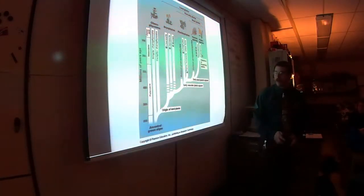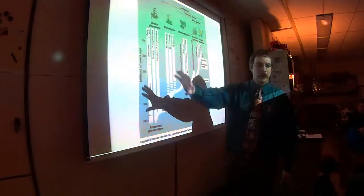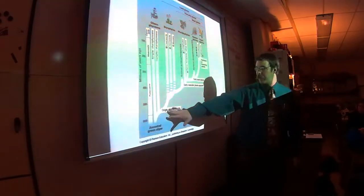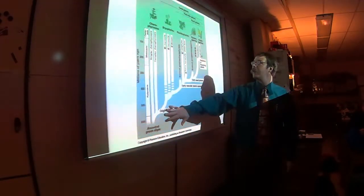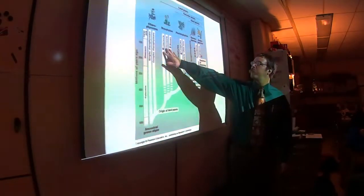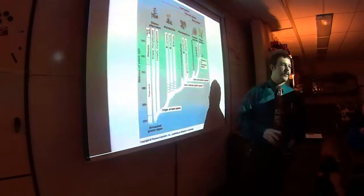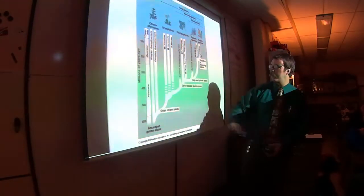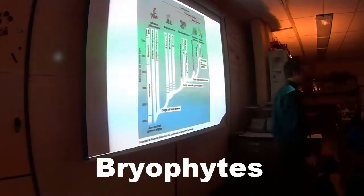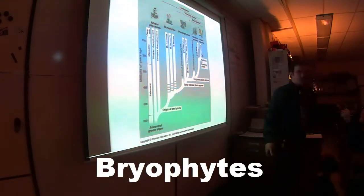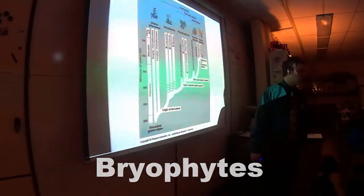Here's a little cladogram showing how it works. Here are the ancestral watery plants and the origin of land plants. The three main groups we're going to look at are the liverworts, the hornworts, and the mosses — our non-vascular plants, collectively called the bryophytes. So if you hear somebody say 'bryophyte,' those are non-vascular plants.